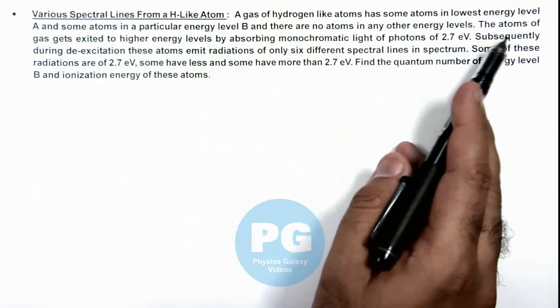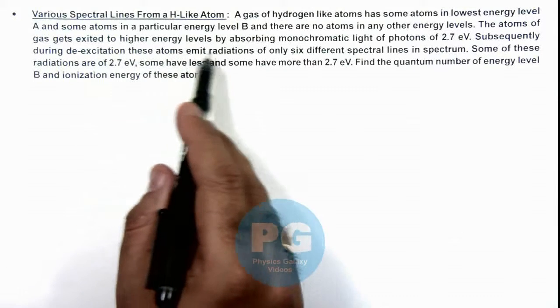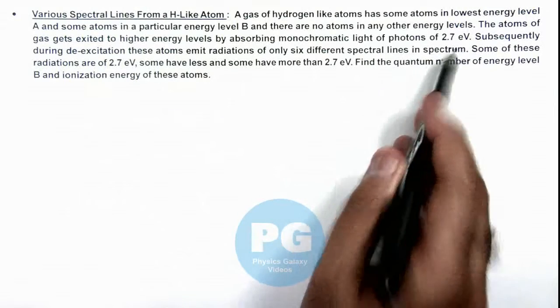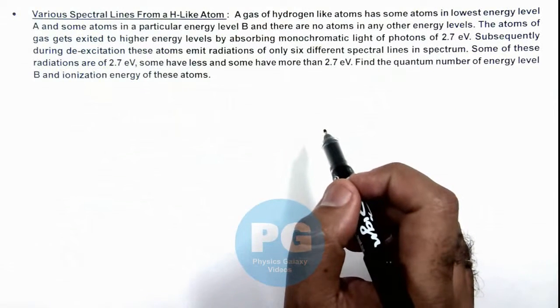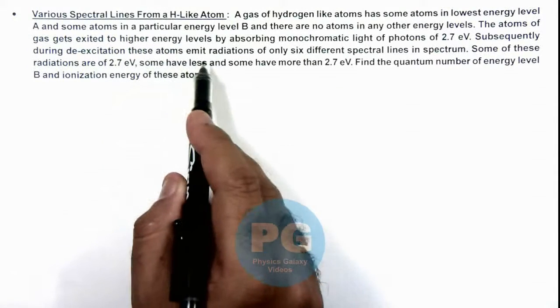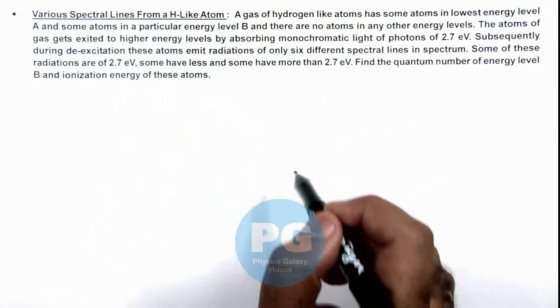It is saying the atoms of gas get excited to higher energy levels by absorbing monochromatic light of photons of 2.7 electron volts. Subsequently, during de-excitation these atoms emit radiations of only 6 spectral lines in the spectrum.